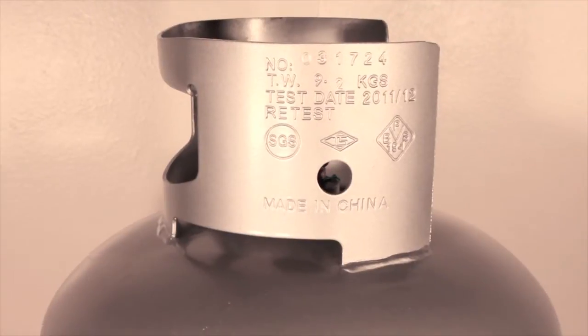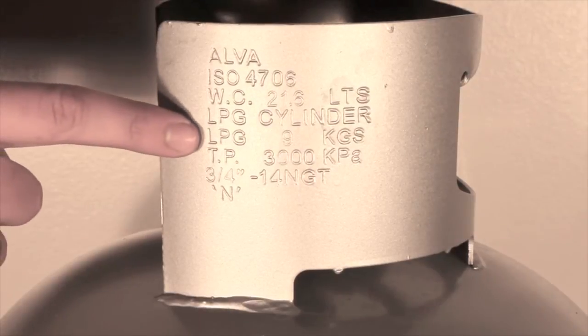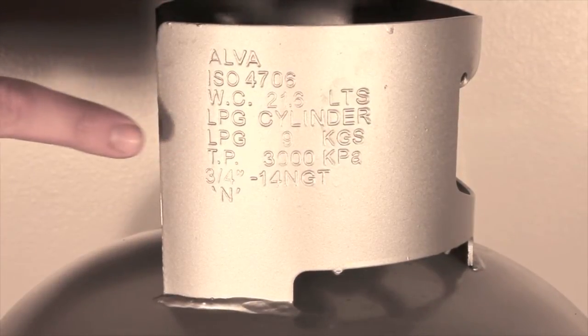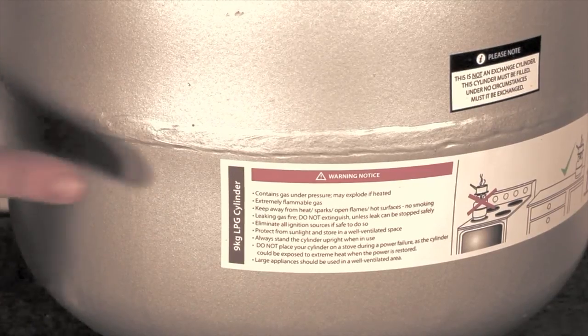Add the gas capacity of your cylinder to the tare weight. This will indicate the absolute maximum weight your cylinder should ever be. Any measurements over this indicate your cylinder is overfull.